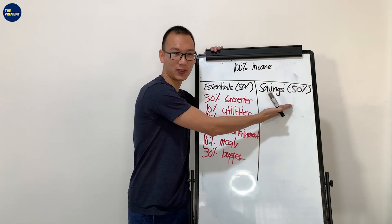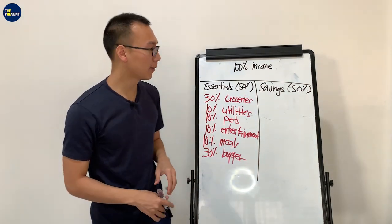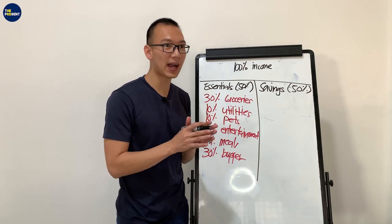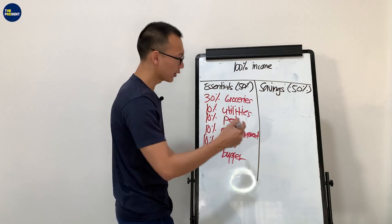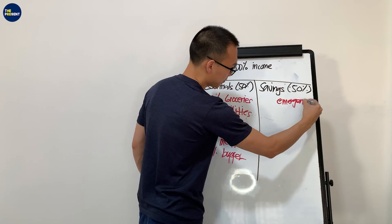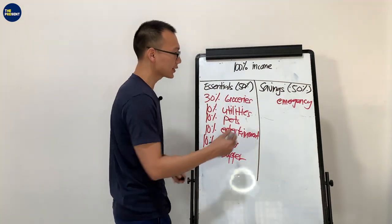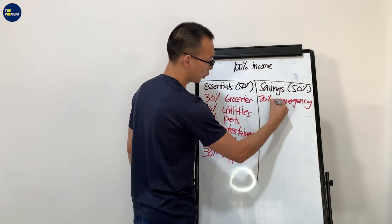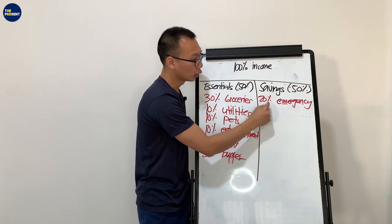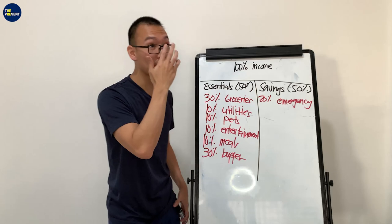Now that we've talked about essentials, we're now going to transfer to savings. When it comes to savings, how we save money is that we divide it into three things. The first one is what we call the emergency account. We are saving money for emergencies. In this case, it is actually 20%. So from the 50% of our income, 20% of that goes to our emergency account.